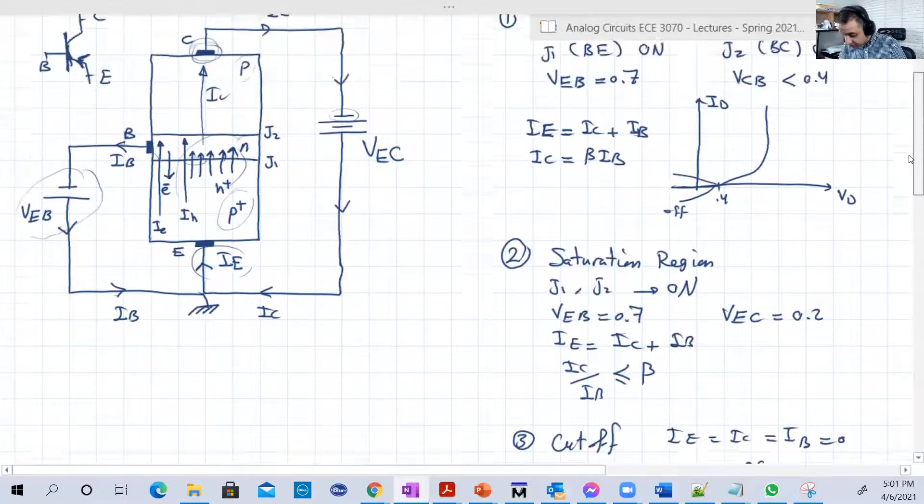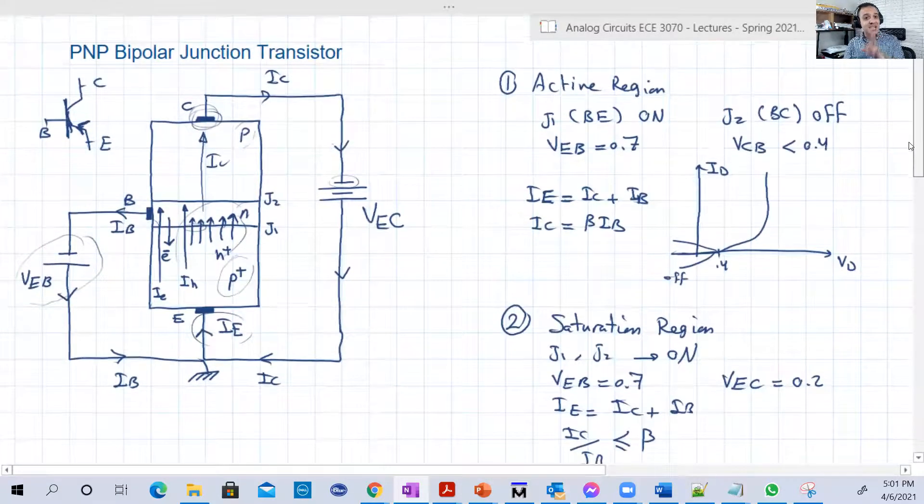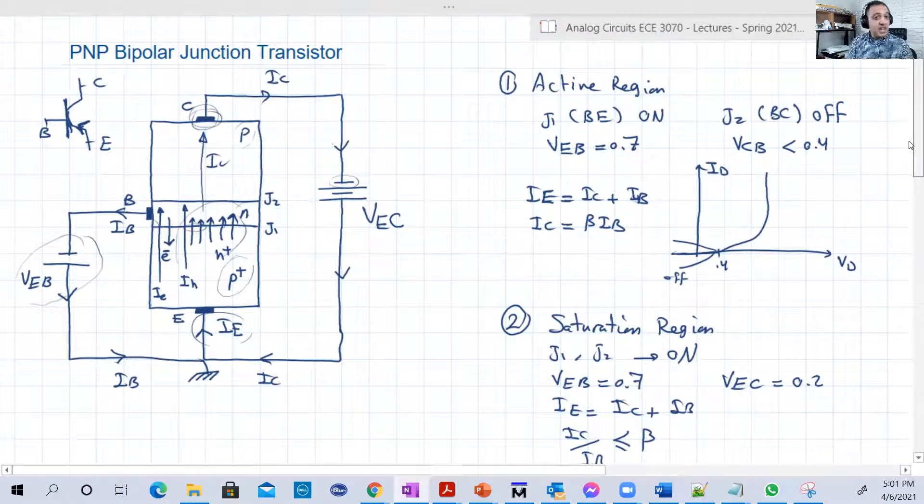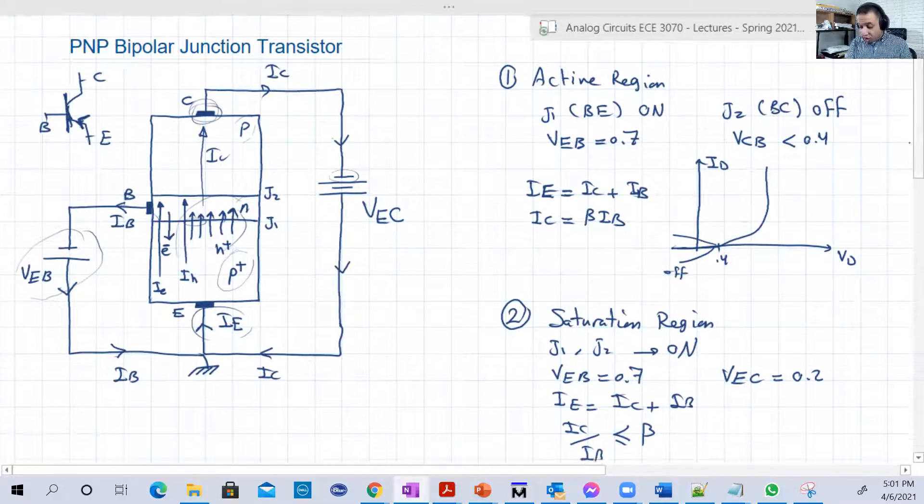Because you will have negligible currents, we can say. So it's basically the same as NPN, exactly the same. But we just flipped the directions of either voltages or even the currents. Everything is flipped here.